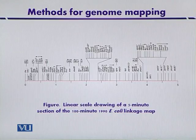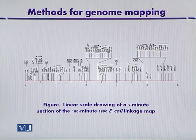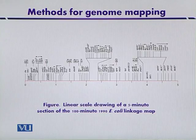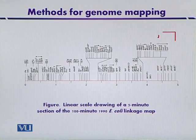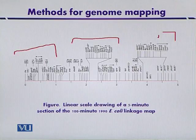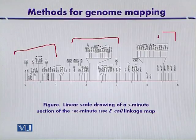The next diagram is a more recent one constructed in 1990. It shows a portion of the map — approximately a 5-minute interval out of the full 100-minute map — and it is also an E. coli linkage map. The different arrows indicate the direction of transcription, and the position of different genes is shown along the chromosome. This map gives the position of around 1400 genes.